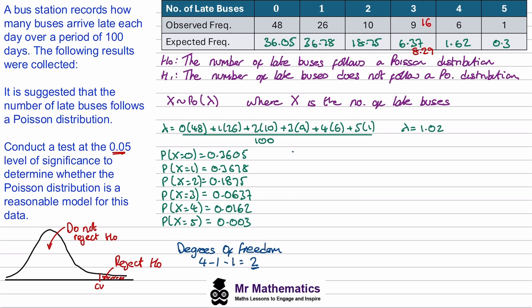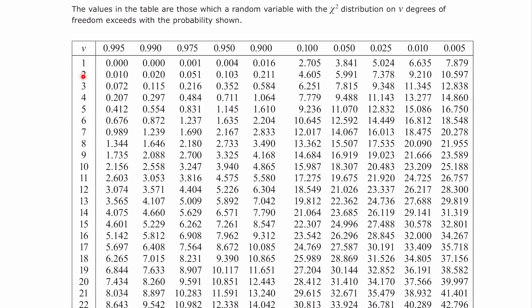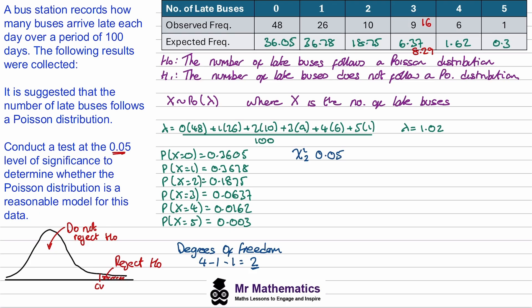So our chi-square test will have 2 degrees of freedom and a significance level of 0.05. We can go to our chi-square distribution table. We have 2 degrees of freedom, a significance level of 0.05. So we're looking at a critical value of 5.991. I'll make a note of this on our graph, 5.991. I'll make a note over here as well.